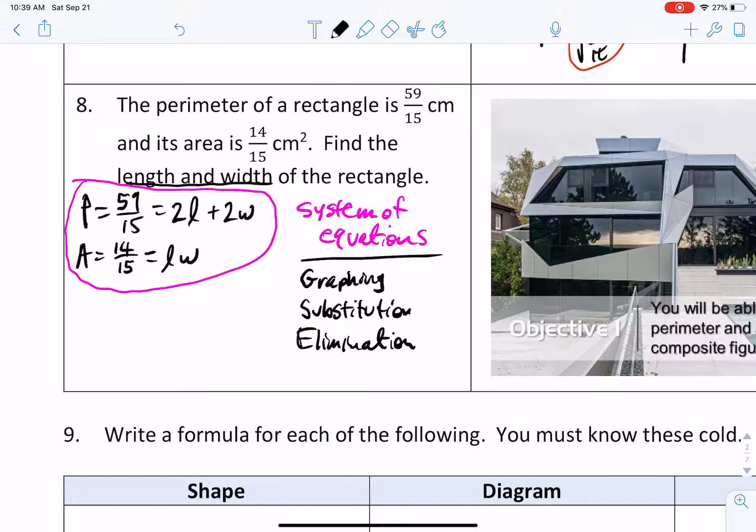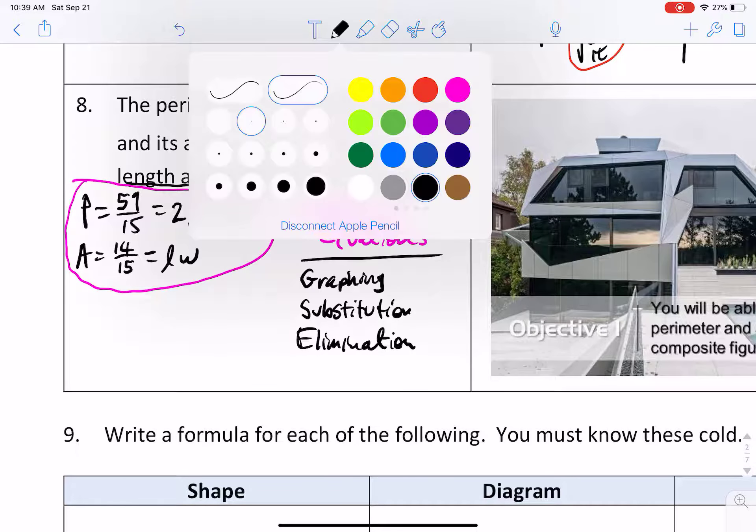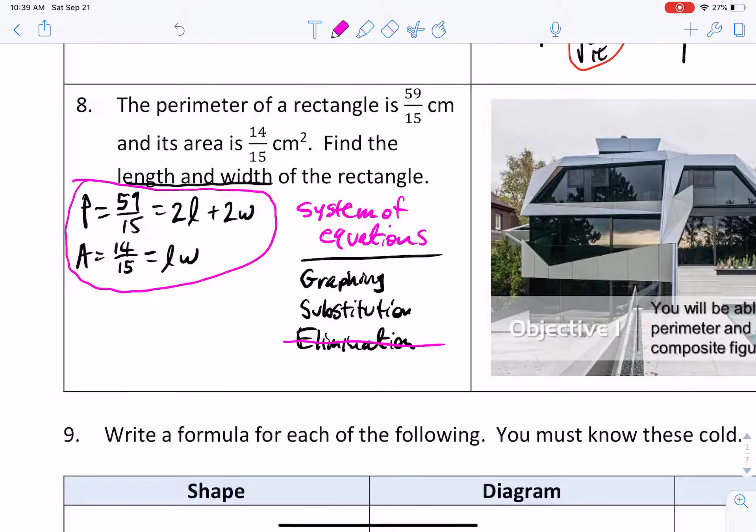What's going to be best for this particular problem? I'm going to get rid of elimination right off the bat. The reason why is because elimination works best with linear equations. We've got that for the perimeter, but the area equation, since it's length multiplied times width, it's a type of quadratic equation.